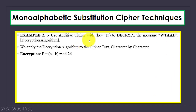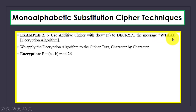Now we will apply the decryption algorithm. Using additive cipher with key 15 again, we decrypt the ciphertext 'WTAAD' back to the original message. The decryption algorithm is P = (C - K) mod 26.